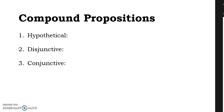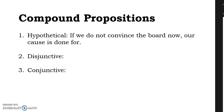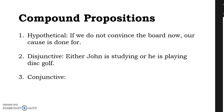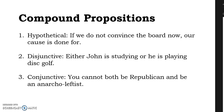Now, compound propositions. There are three kinds: hypothetical, disjunctive, and conjunctive. Hypothetical: 'If we do not convince the board now, our cause is done for.' The if-then compound proposition is called the hypothetical proposition — if x, then y. Disjunctive: 'Either John is studying or he is playing disc golf' — either x or y. Conjunctive: 'You cannot both be Republican and be an anarcho-leftist' — you cannot both be x and y.